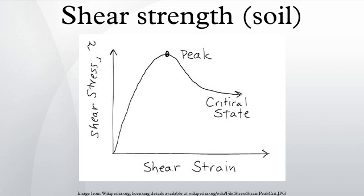Drained shear strength is the shear strength of the soil when pore fluid pressures generated during the course of shearing the soil are able to dissipate during shearing. It also applies where no pore water exists in the soil and hence pore fluid pressures are negligible. It is commonly approximated using the Mohr-Coulomb equation combined with the principle of effective stress. In terms of effective stresses, the shear strength is often approximated by τ = σ′ tan φ + C, where σ′ = σ − U is defined as the effective stress.